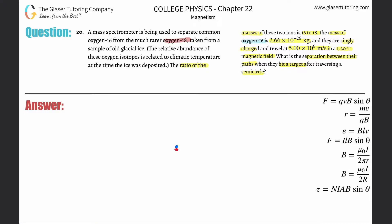I'm going to describe their curved path in a magnetic field. Looking at the formula, the radius equals mass times velocity divided by charge times magnetic field. As the mass increases and everything else stays constant, the radius of the curved path also increases. Oxygen-16 is less massive than oxygen-18 — oxygen-18 has 18 total protons and neutrons versus 16 — so oxygen-18 will have a larger radius of curvature, and oxygen-16 will have a smaller radius.